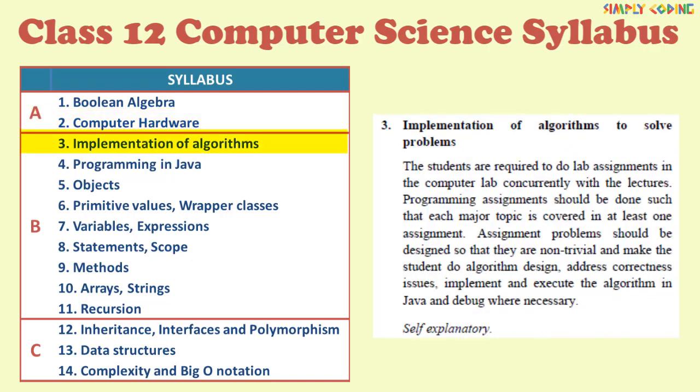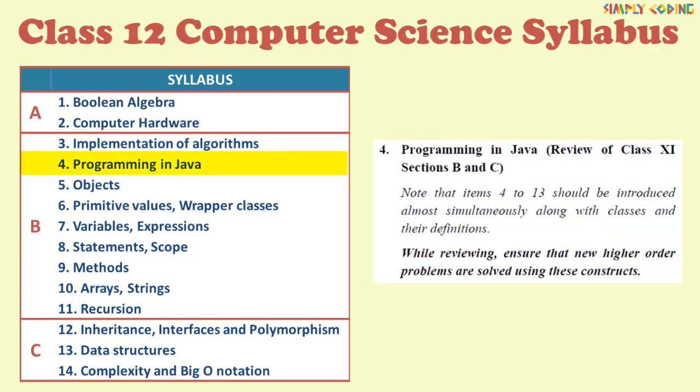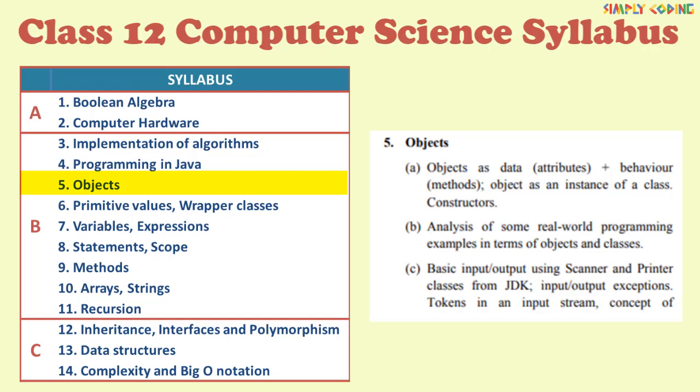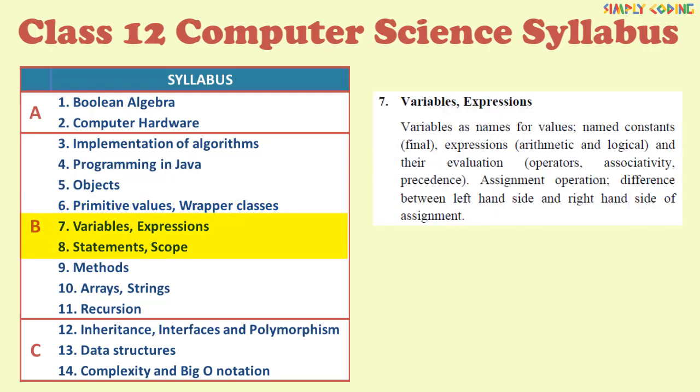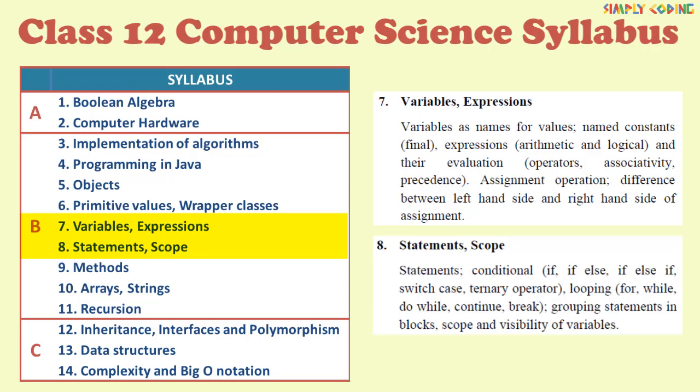In section B there is no change in implementation of algorithms or programming in Java which is revision of class 11 syllabus. In objects, in subsection B only scanner class is kept, the printer class is removed. Next in subsection 6 there is no change in primitive values, wrapper classes, types and casting. Similarly, in next two subsections variables, expressions or statements, scope section there is no change done here and it remains the same.